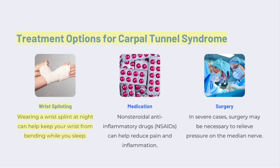Treatment Options for Carpal Tunnel Syndrome. Wrist Splinting: Wearing a wrist splint at night can help keep your wrist from bending while you sleep. Medication: Non-steroidal anti-inflammatory drugs, or NSAIDs, can help reduce pain and inflammation. Surgery: In severe cases, surgery may be necessary to relieve pressure on the median nerve.